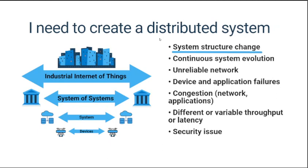Because system elements such as devices or applications can enter or leave the system, the structure of the system changes dynamically. The next problem: distributed systems are constantly evolving throughout their life cycle. Changes are inevitable, but changes can lead to integration problems if you change interfaces.